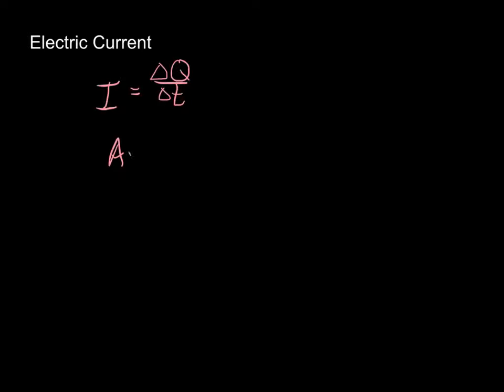The unit for current is an amp, or ampere, which is abbreviated with an A, and that's equal to our charge, which is in coulombs per time second. So an amp is a coulomb per second, how much charge per time.